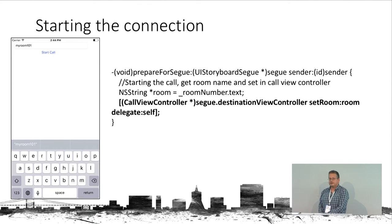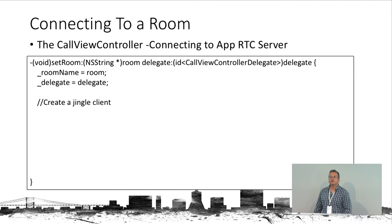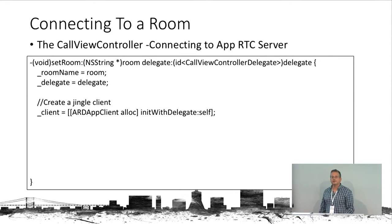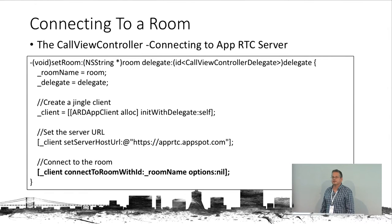When we start the application, we see the main view where we input the room number we want to connect to. When we press start call, we will start connecting. In our code, we create a jingle client — an ARD App Client — which is an object that knows how to talk to an AppRTC server and is part of WebRTC's code. We tell it to connect to our room, and it will call back with methods on events and notifications.